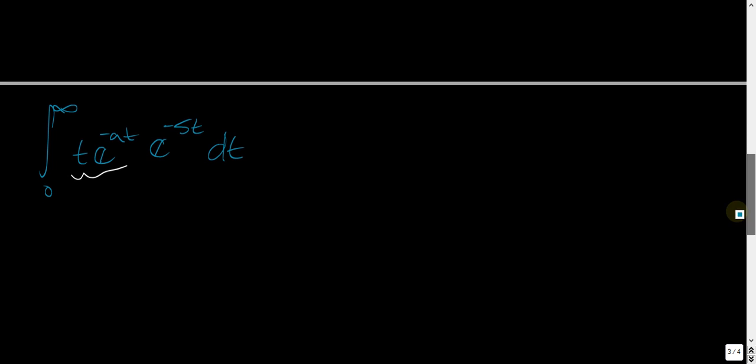Okay, so the integral from 0 to infinity, t, and then e, whenever you have two variables multiplied by each other, you add their exponents.